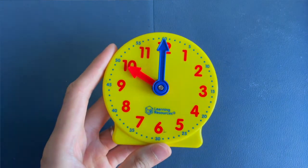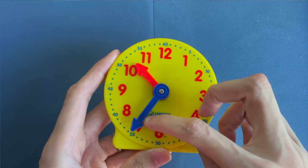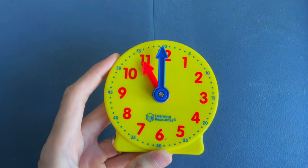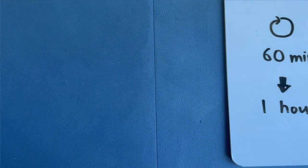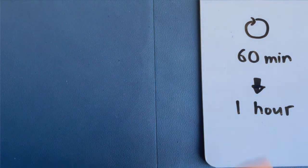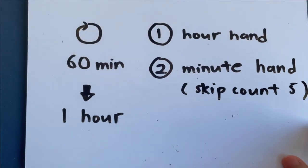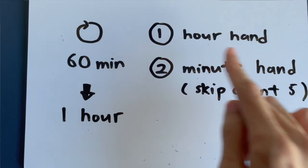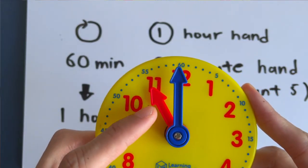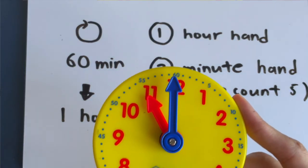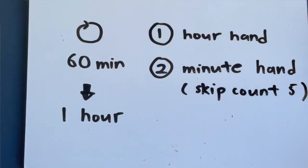To recap what we have learned today: when the minute hand travels one round around the clock, that means 60 minutes has passed, and 60 minutes is also known as one hour. Remember the steps for telling the time — first step: look at the hour hand, which is the shorter hand; then look at the minute hand, which is the longer hand; and remember to skip count in fives. I will see you in the next video.